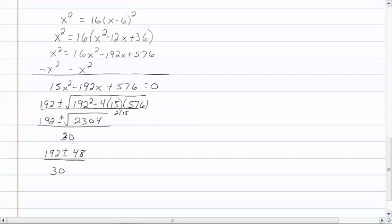So now we have a hundred and ninety-two plus or minus forty-eight all over thirty. So one ninety-two plus forty-eight is going to give us two hundred and forty-four over thirty. And the other one will give us a hundred and forty-four over thirty, which should give us eight and four point eight.